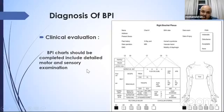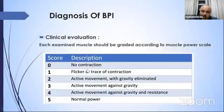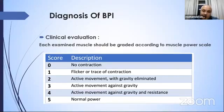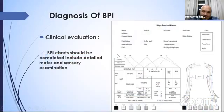Muscle power is graded according to the power scale with six scores from zero to five: zero — no contraction; one — flicker or trace of contraction; two — active movement with gravity eliminated; three — active movement against gravity; four — against gravity and some resistance but with weakness; five — normal power. Each muscle in the chart should be graded from zero to five.